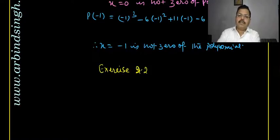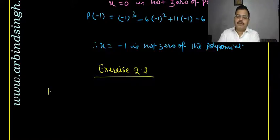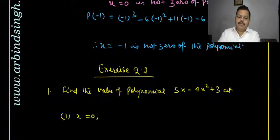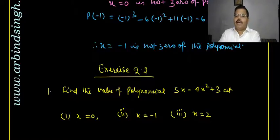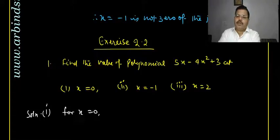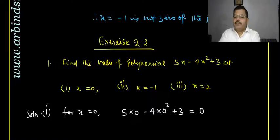Exercise 2.2, Question 1: Find the value of polynomial p(x) = 5x − 4x² + 3 at (i) x = 0, (ii) x = −1, (iii) x = 2. For x = 0: p(0) = 5(0) − 4(0)² + 3 = 0 − 0 + 3 = 3. The value of the polynomial is 3.